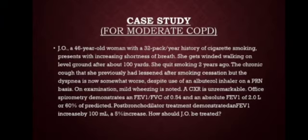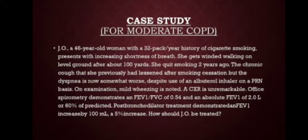The case study for moderate COPD involves a 46-year-old woman named Jo with a 32 pack-per-year history of cigarette smoking. She presents with increasing shortness of breath, getting winded walking on level ground after about 100 yards. She quit smoking two years ago; the chronic cough lessened after cessation, but dyspnea is now somewhat worse despite use of an albuterol inhaler on a PRN basis. On examination, mild wheezing is noted and CXR is unremarkable.